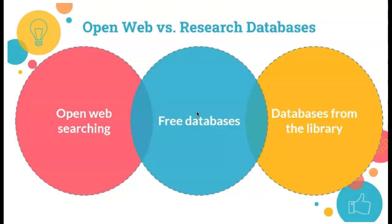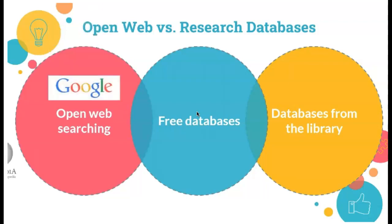Library databases hold scholarly articles that are not available to the general public and are more credible than most open websites that you might find with a Google search. A Google search is great for finding background information or getting quick facts about a topic. While you should never depend on a source like Wikipedia for your college research, it can be a place to get a quick understanding of a topic before moving on.